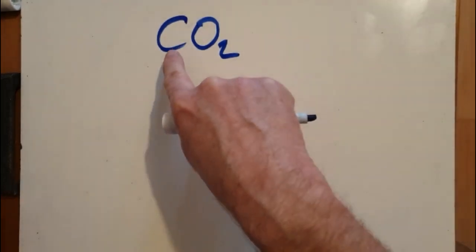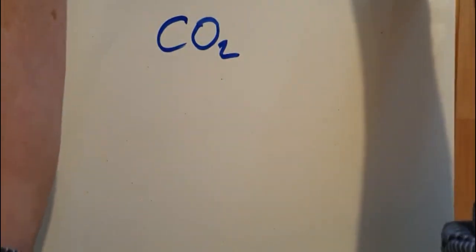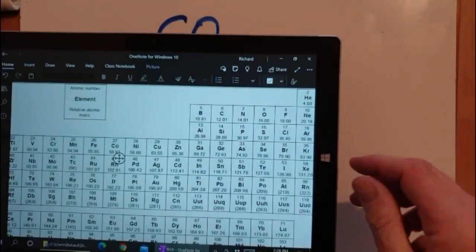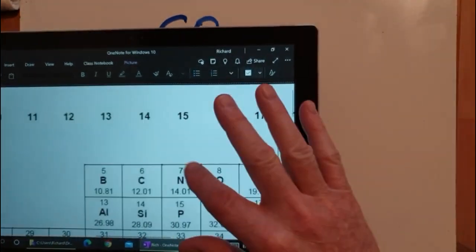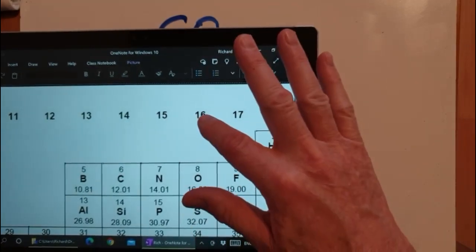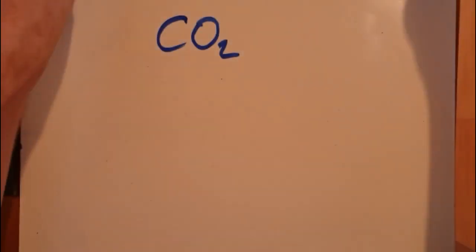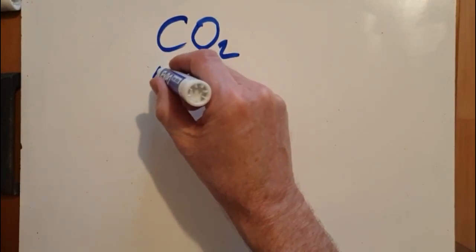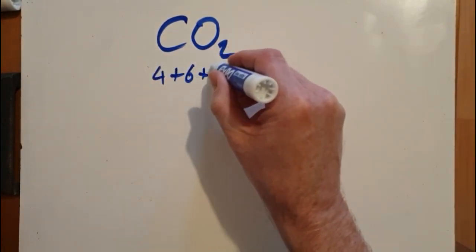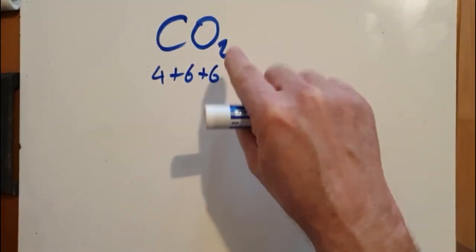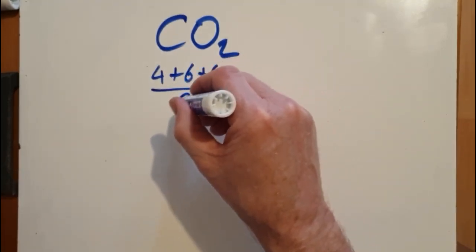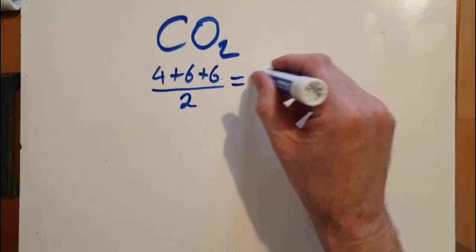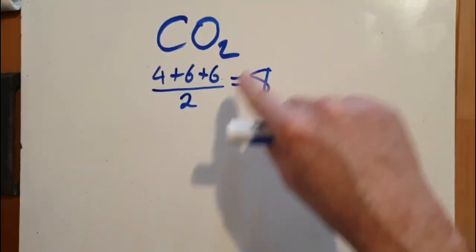Since it's a covalently bonded molecule, we need to know what the valence electrons are up to. Carbon is in group 14 so it has four valence electrons, and oxygen is in group 16 so it has six valence electrons. We have four from the carbon and six and six from the oxygens, so that's 16. Electrons go around in pairs, so divide by two — that gives eight electron pairs to distribute around this molecule.